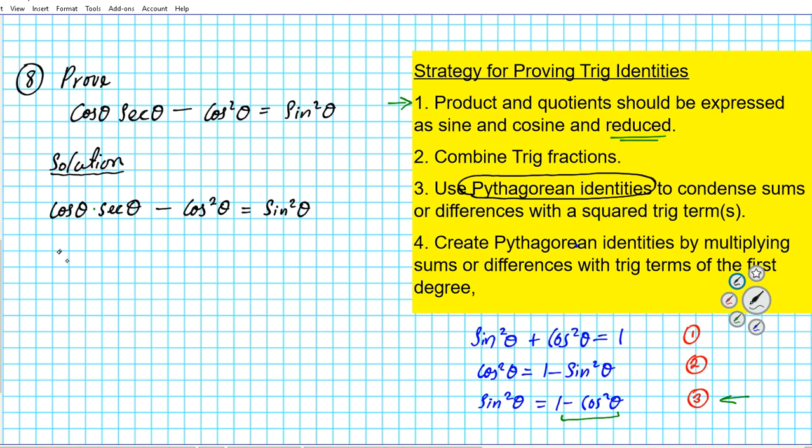Cosine is already in the desired form, cosine theta, we'll leave that alone. But secant theta, using the reciprocal identity, can be rewritten as one over cosine theta, minus cosine squared theta equals sine squared theta. Now, let's see what did we use here? We used the reciprocal identity. So now that we've written that product of trig functions using sine and cosine only, we can clearly see that cosine is a factor that can be divided out.